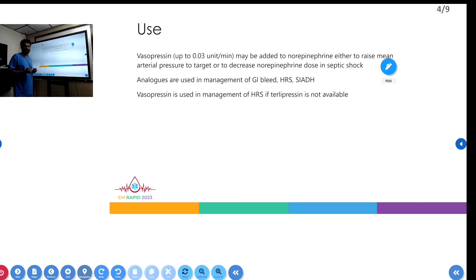Vasopressin is used in patients with shock, along with noradrenaline. Initially noradrenaline is started, and then vasopressin is added as a second drug. It is used at up to 0.03 units per minute, added to noradrenaline to either raise mean arterial pressure or decrease the noradrenaline dose in septic shock.